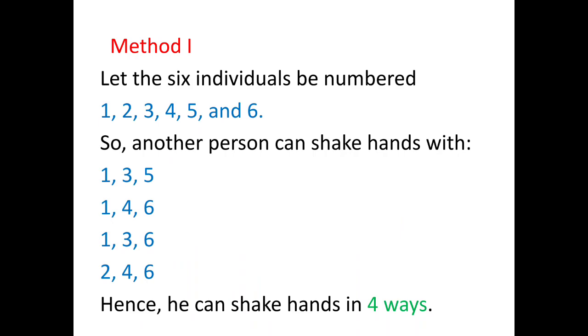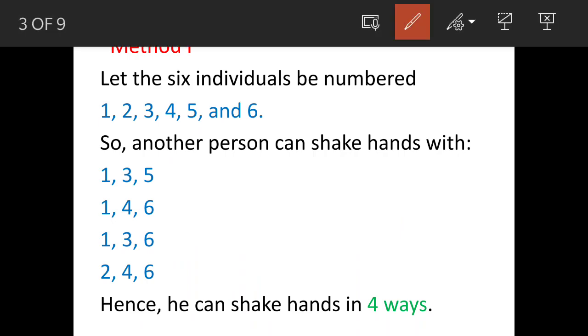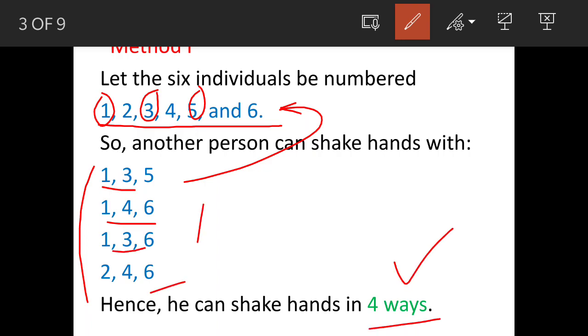We will first see the mental calculation method. Six people - one, two, three, four, five, six. The person can shake hands with minimum three every time and leaving out a gap of one person minimum in between: one, three, five; one, four, six. So this is the first arrangement and then you can see other three arrangements. In this manner he can shake hands with four people.